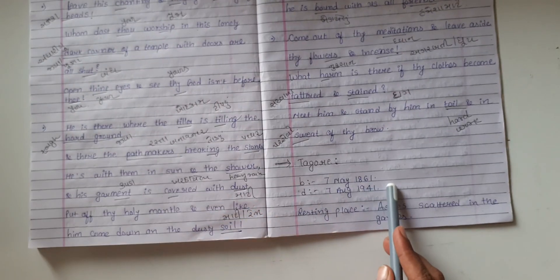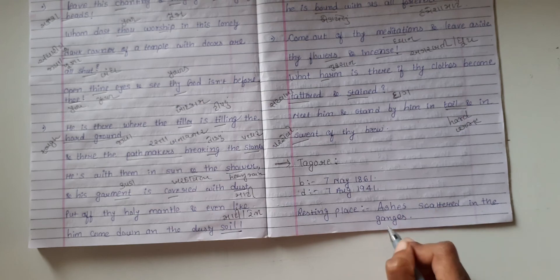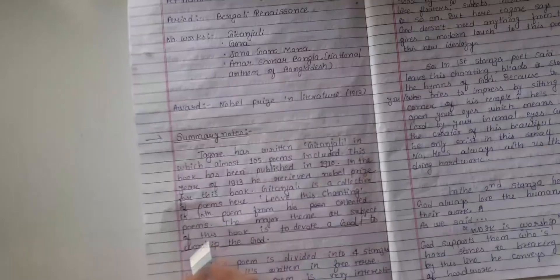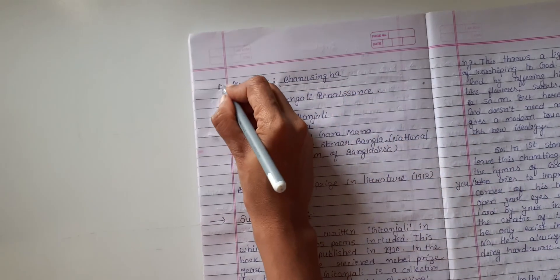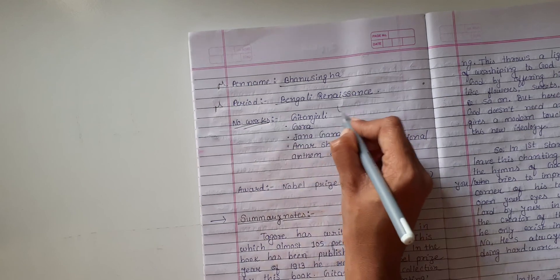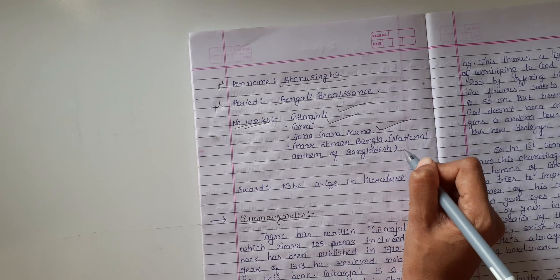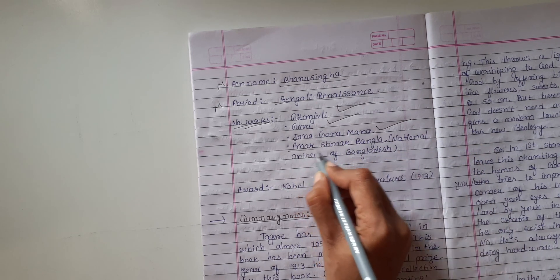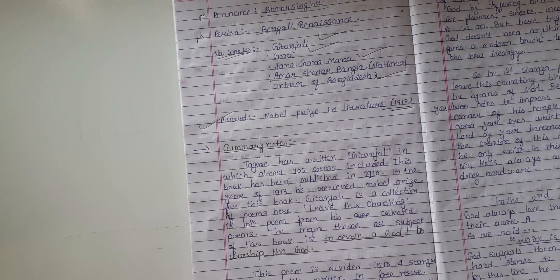Now, Tagore was born on 7 May 1861 and died on 7 August 1941. His resting place - as he was Hindu, his ashes were immersed in the Ganges. His pen name is Bhanu Singha, and the period of his writing is Bengali Renaissance. His notable works are Gitanjali, Gora, Jana Gana Mana (our national anthem), and he has also written another national anthem, Amar Shonar Bangla, which is the national anthem of Bangladesh. And he got a Nobel Prize in 1913 for the wonderful work Gitanjali.